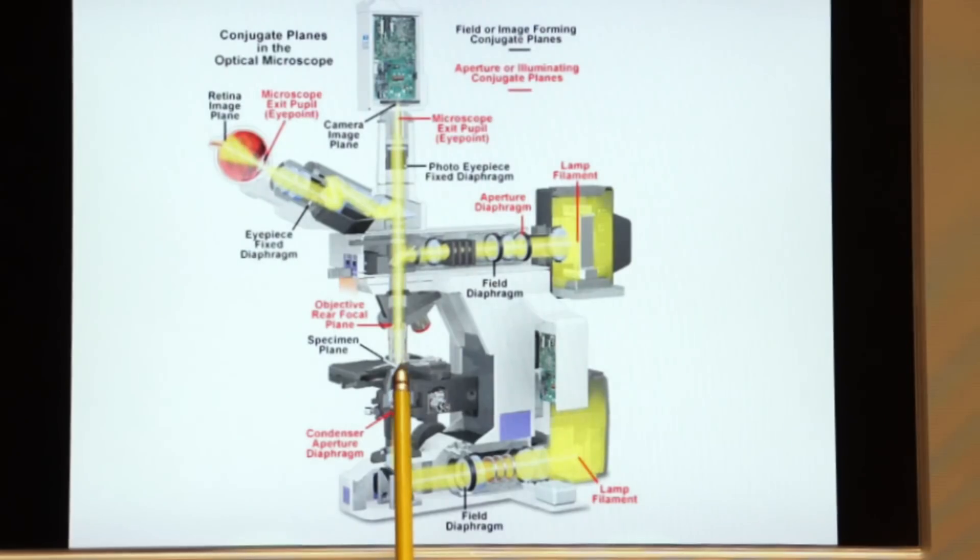Now the light that is emitted from our specimen travels through the objective, through the nose piece, through the mirror and up into the trinocular tube where the observer can see it or we can record it on film. That's reflected light fluorescence microscopy.